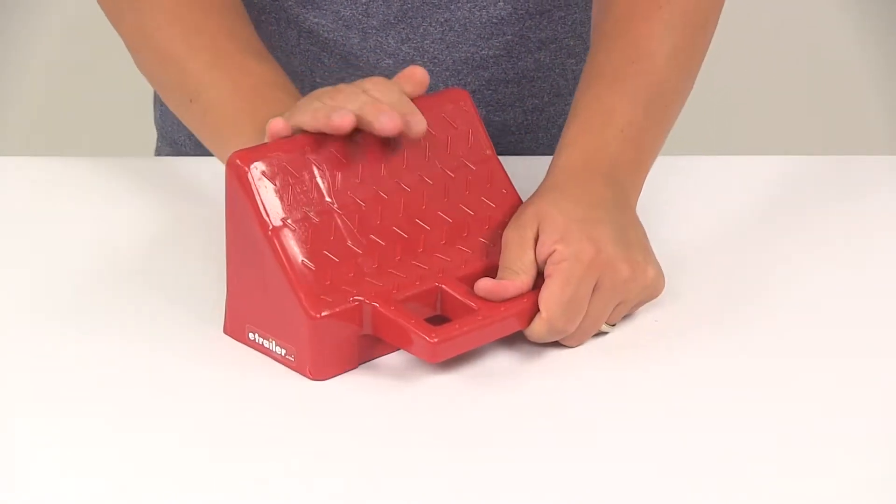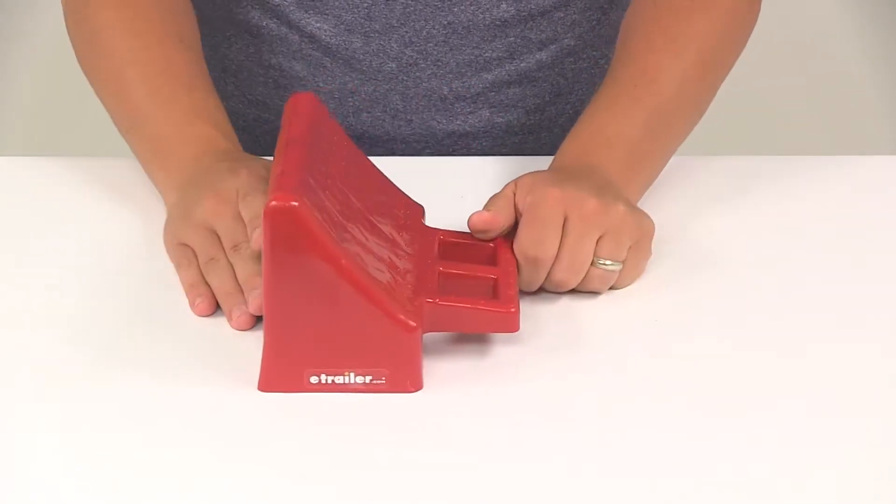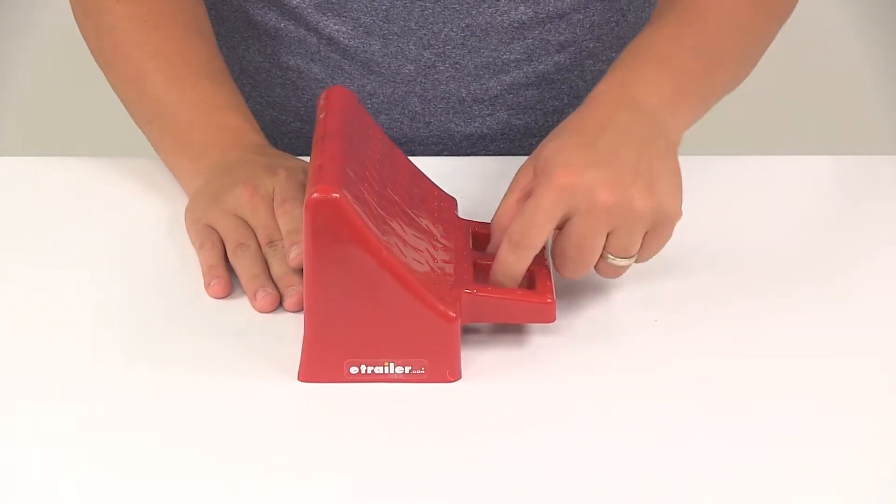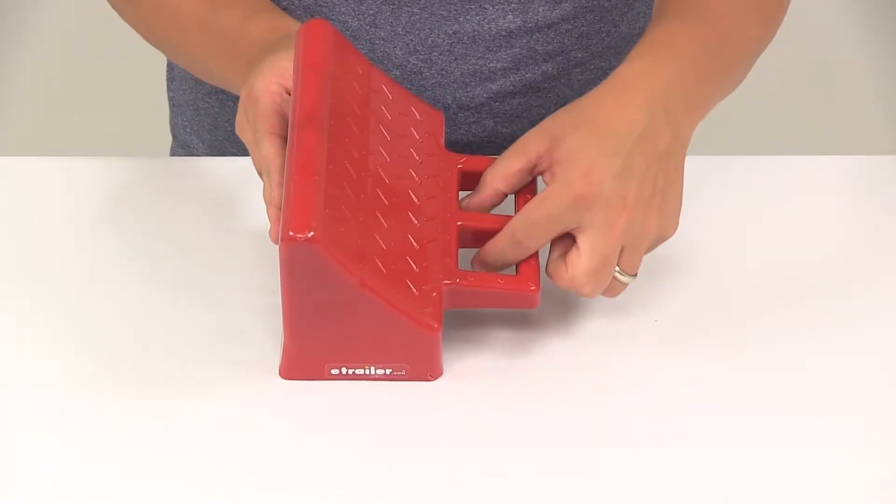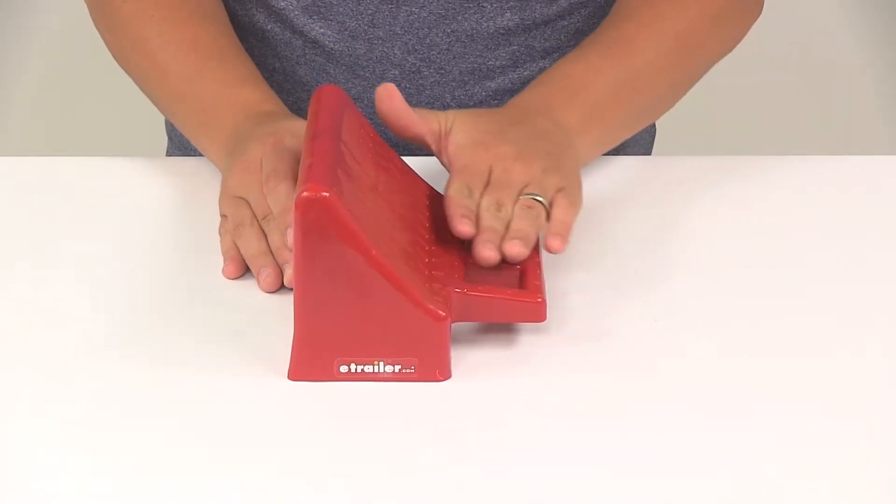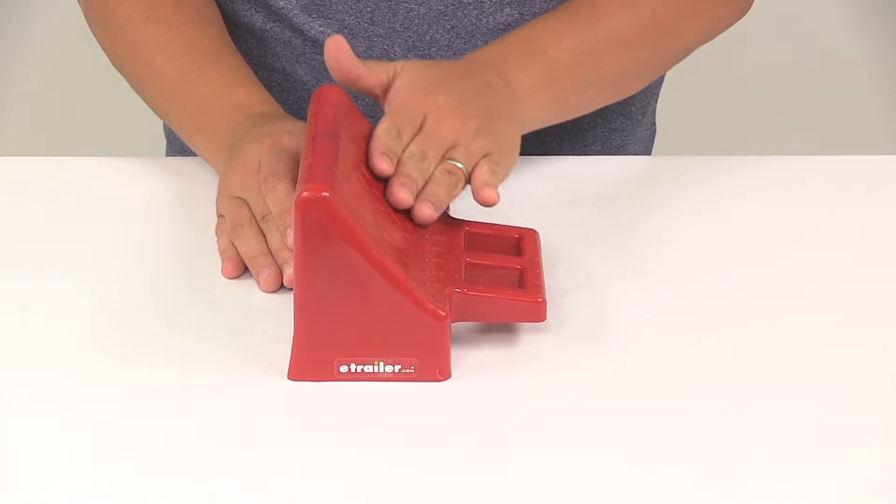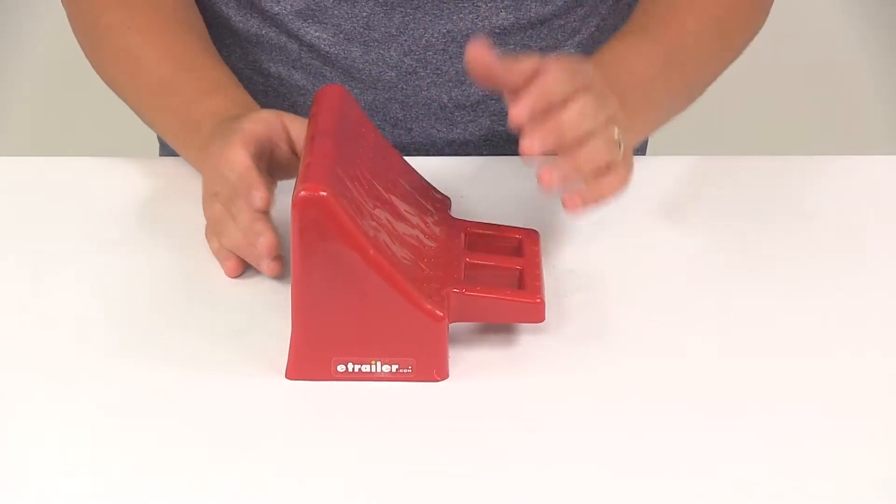Now the attached handle makes placing and removing the chock quick and easy and the handle is also used for interlocking. You can see the two gaps right there and then it's also going to create a nice smooth slope to the chock kind of like a little ramp which is a really nice design of the unit.